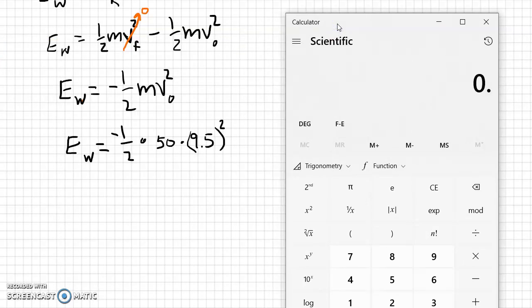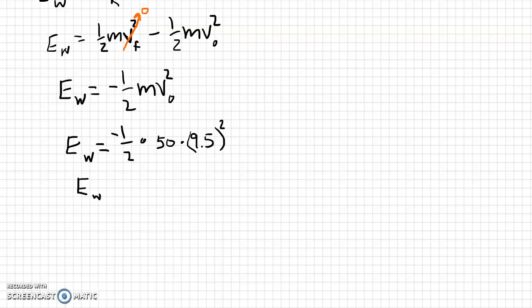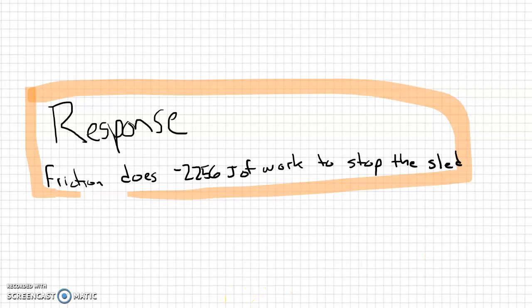So let's go ahead, bring up a calculator, and let's see what we get. So we have 0.5 times 50 times 9.5 times 9.5, and we get, looks like, 2,256. And because of the negative, of course, that tells us that there's energy being removed. There is going to be negative 2,256 joules worth of work done. So to respond to our question for this problem, the friction does negative 2,256 joules of work to stop the sled.